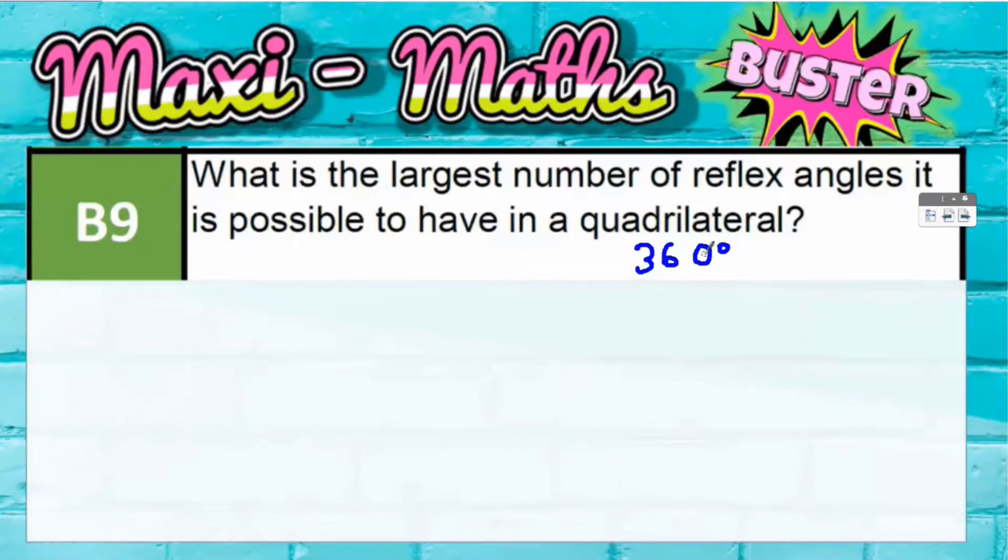Think about what you know. You know that a quadrilateral adds up to 360 degrees, the angles add up to 360 degrees, and you know that a reflex angle has to be greater than 180 degrees.